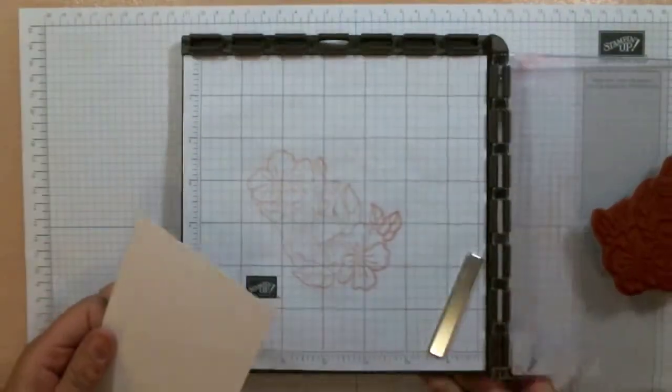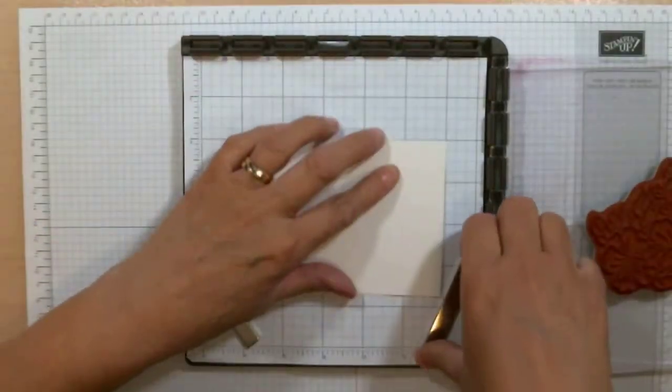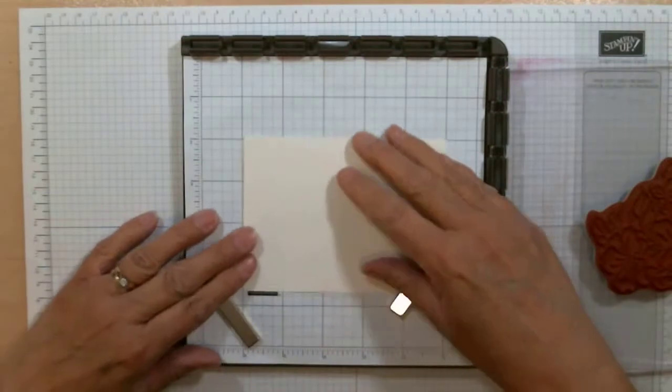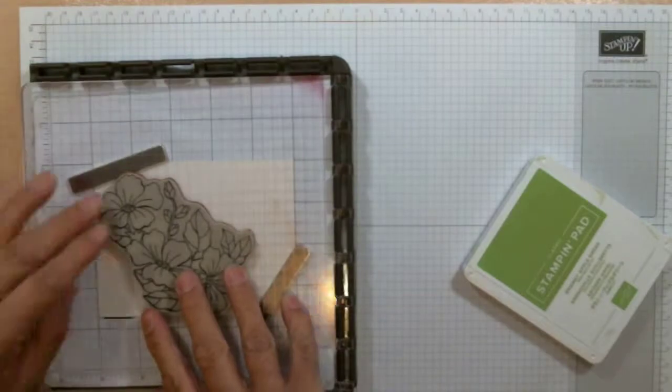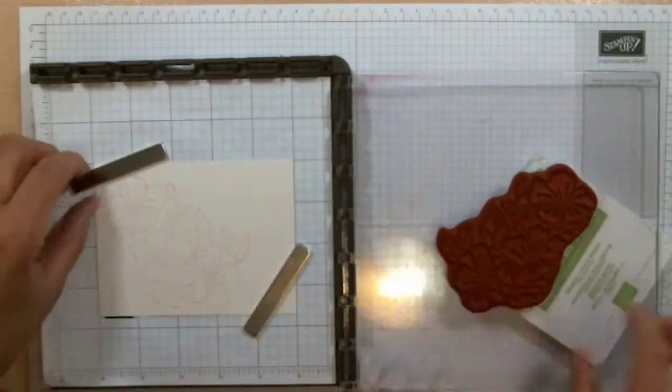I started off using my Stamparatus, and I'm using shimmery white cardstock for this one. The three samples I showed you at the beginning were with watercolor paper. I'm using Powder Pink ink.